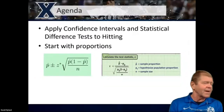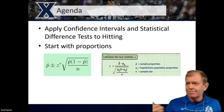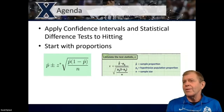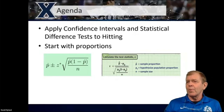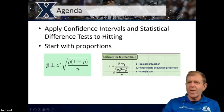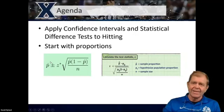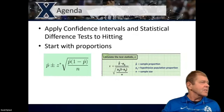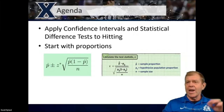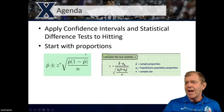I wanted to get into the meat of the presentation. We're going to look at confidence intervals and statistical difference tests — one of the early things you learn in statistics class. We're going to start with proportions. The gist of confidence intervals: if we have an estimate — let's say P-hat, so think batting average, on base percentage, some kind of 0-1 measure — do you get on base or not? Do you get a hit or not?